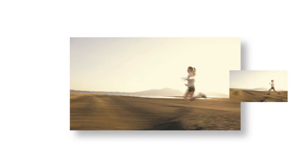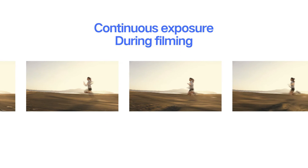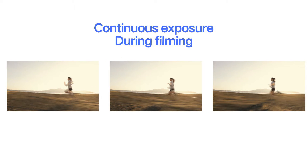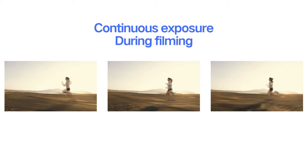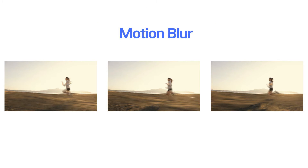Through frame by frame analysis, we found that most frames in films are blurred. Continuous exposure during filming intentionally blurs most frames to capture all the changing information about the object, resulting in a phenomenon similar to motion blur.